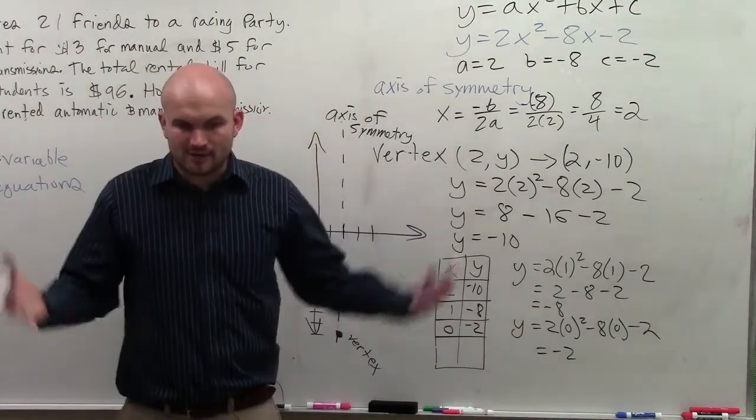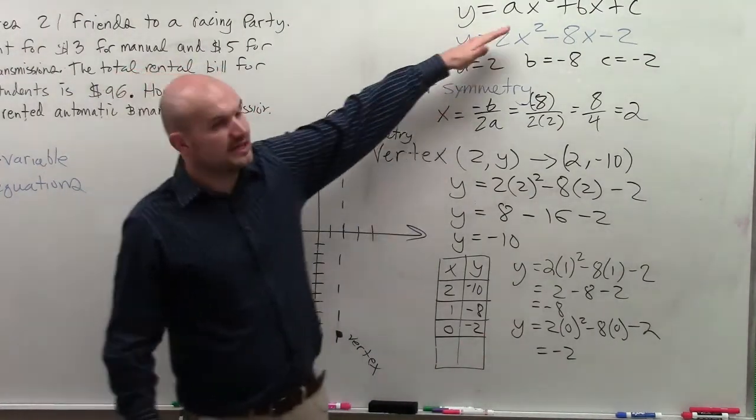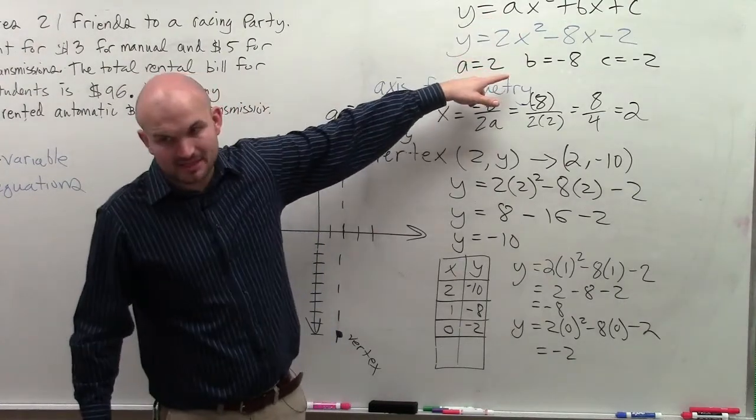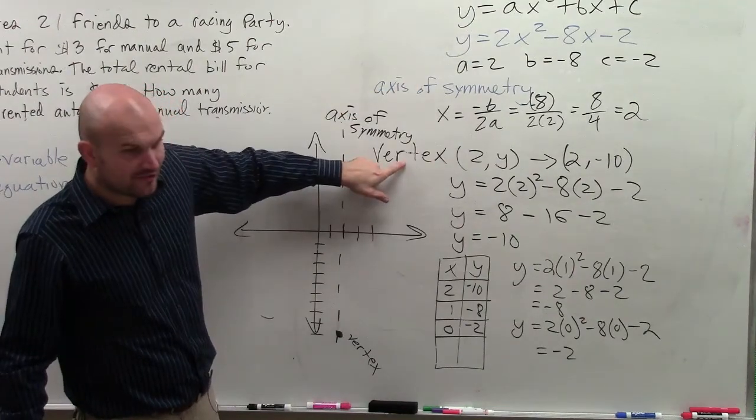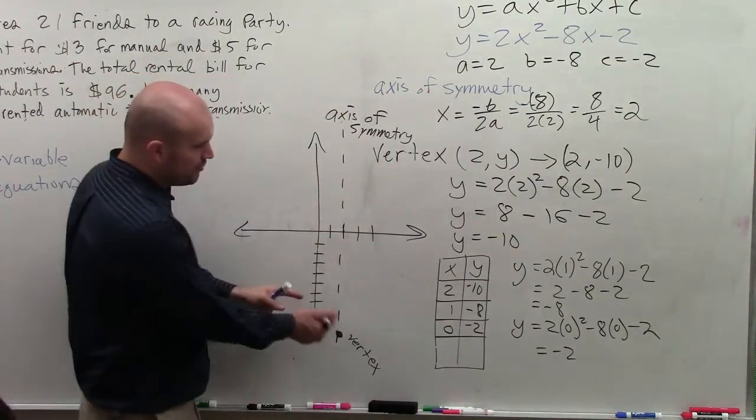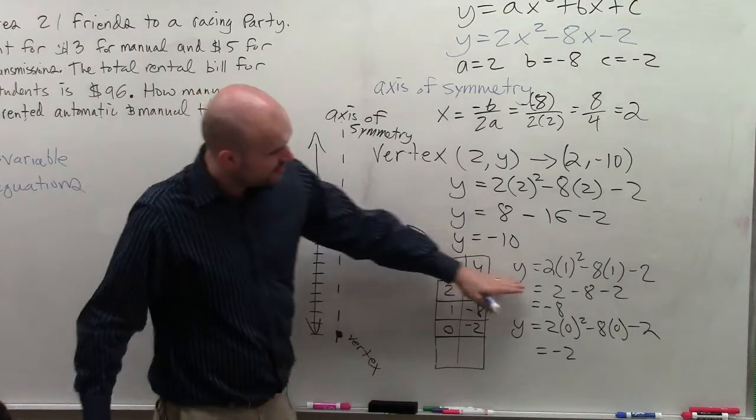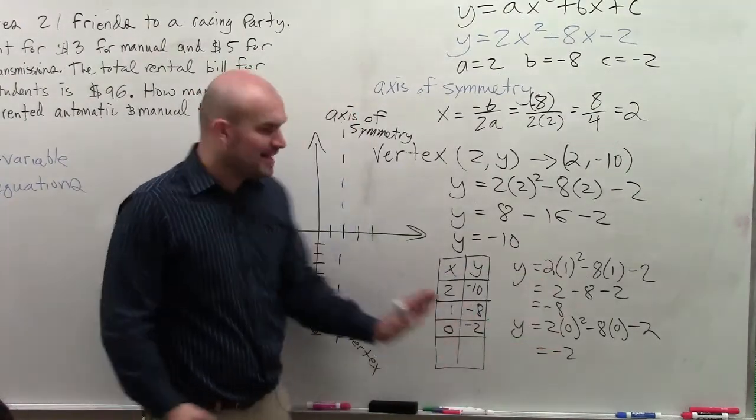So again, I'll kind of recap so far. You give your equation. You find a, b, and c. Then you find the axis of symmetry. Then you find the vertex. Then you choose two points to the left or to the right. You evaluate for them, and you plot them.